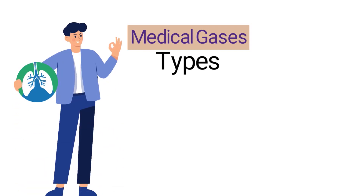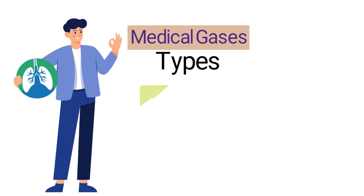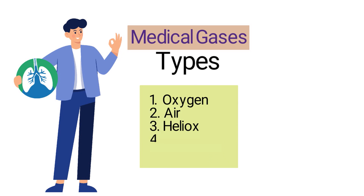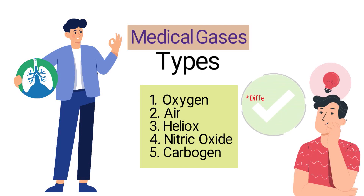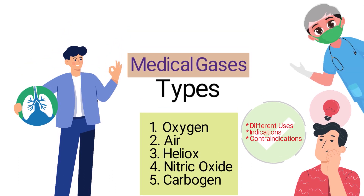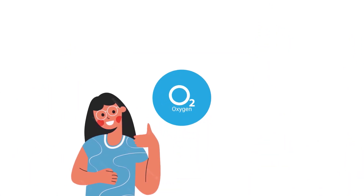There are several different types of medical gases used in the healthcare setting, including oxygen, air, heliox, nitric oxide, and carbogen. Each type of gas has different uses, indications, and contraindications. As a respiratory therapist, you must be familiar with the delivery of each type.